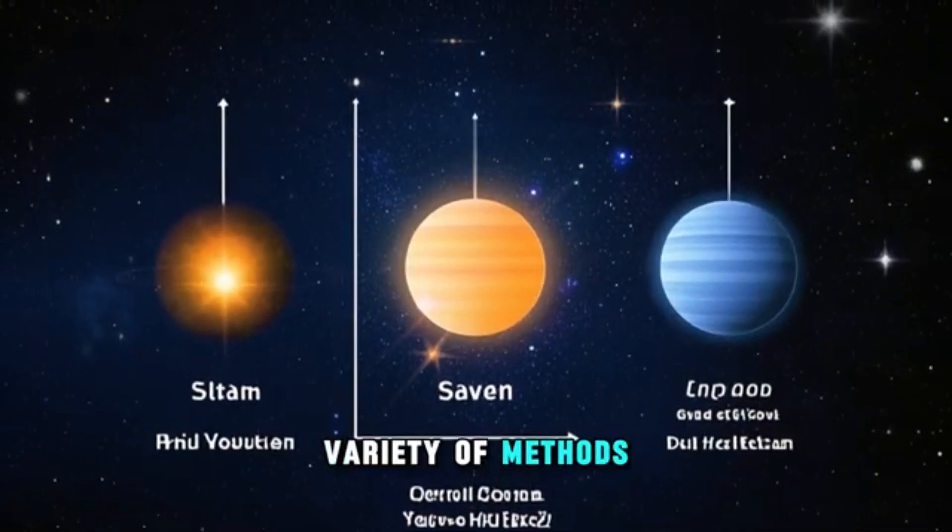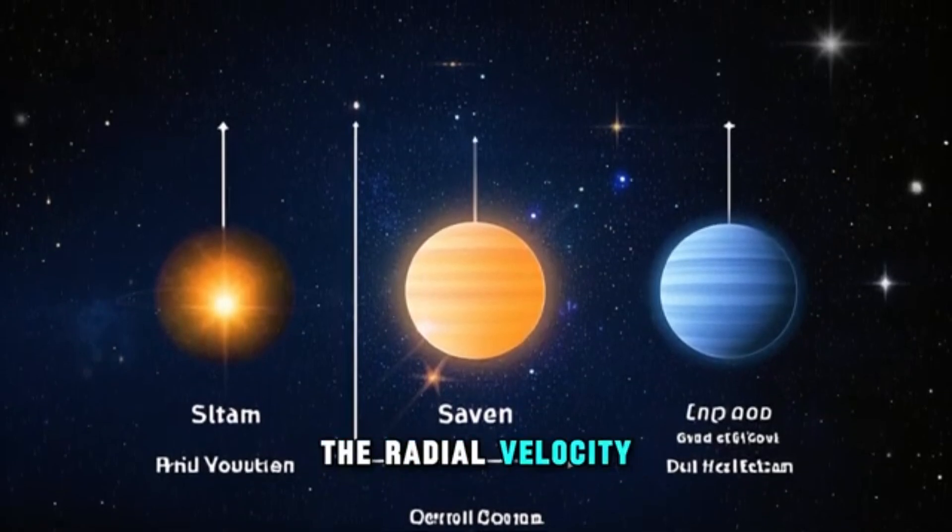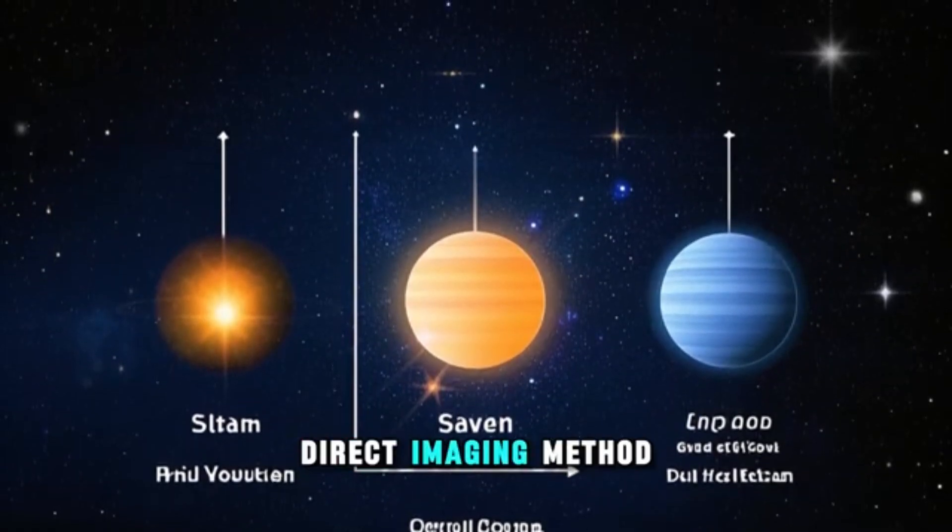Scientists use a variety of methods to discover planets outside of our solar system, including the transit method, the radial velocity method, and the direct imaging method.